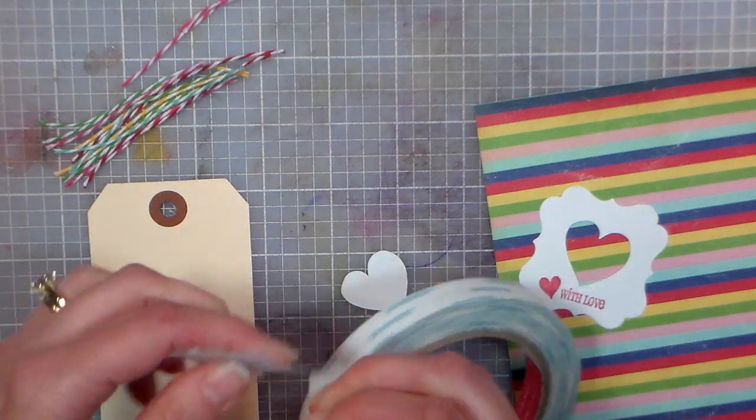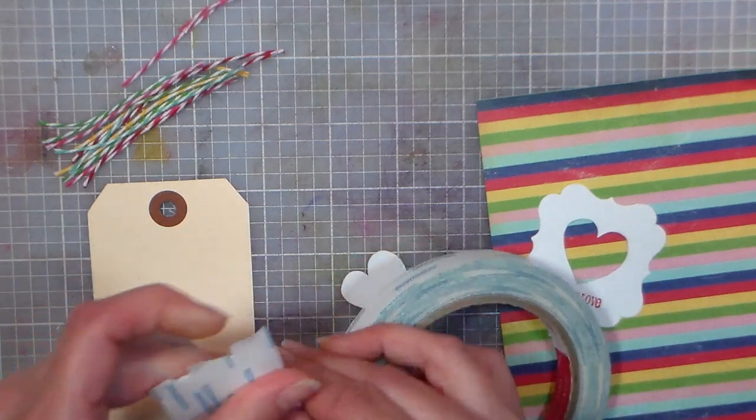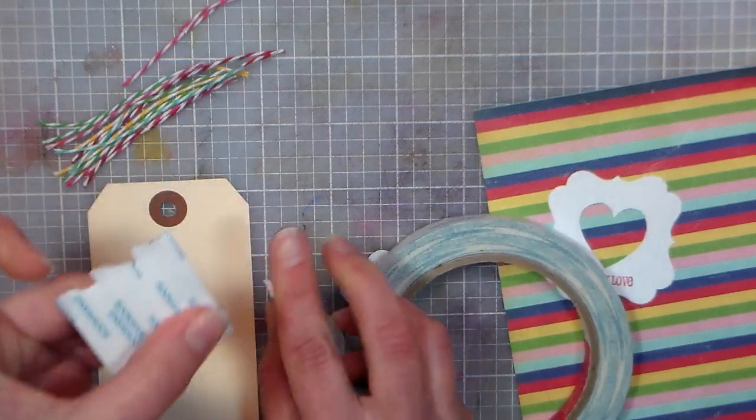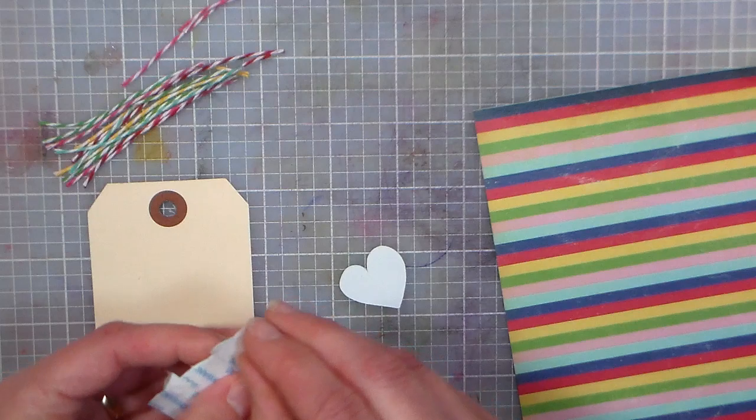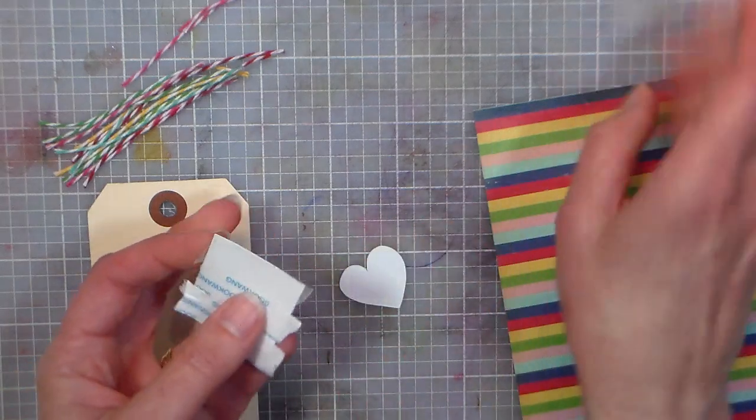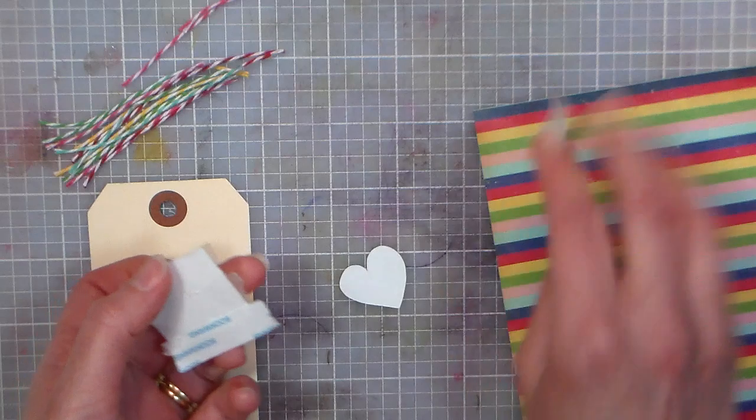The score tape is super sticky, so I know it will work really well, and I like that you can tear it as you go. You can find this at scorepal.com, I believe. Now I'm going to peel off the backing.